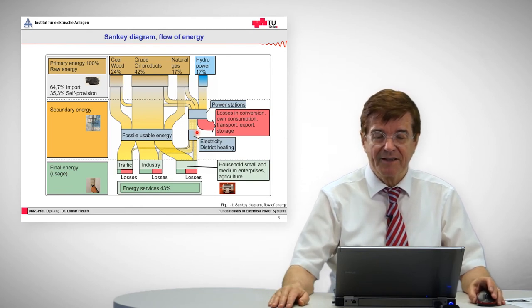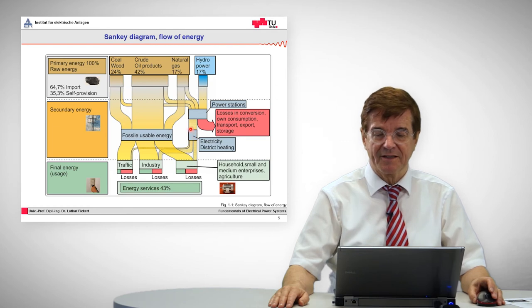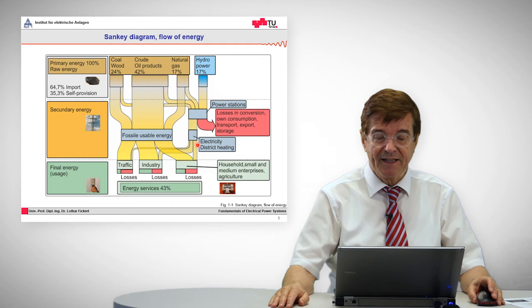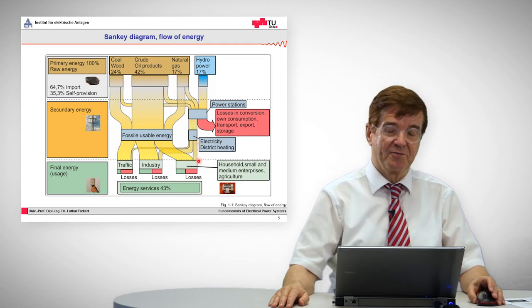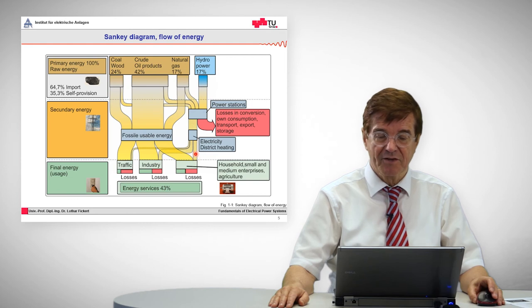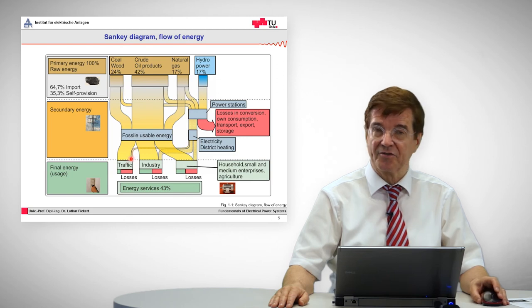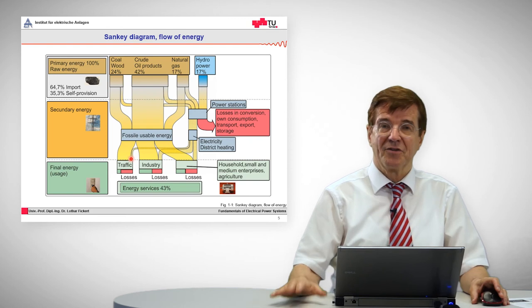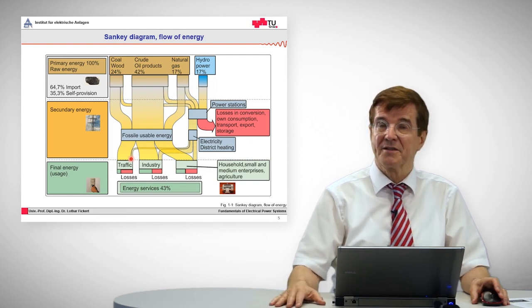The useful energy that comes out of the power stations is again split into the electrical energy used by households, the electrical energy that goes into industry, and electrical energy that goes into traffic - for example, in forms of electric trains, trams, trolley buses, and so on.